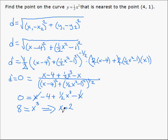So there's our critical number, or our possible x value for our minimum. We plug that in to find y, so y is a half times 2 squared, which is also 2. So the point nearest (4,1) on this curve is the point (2,2).